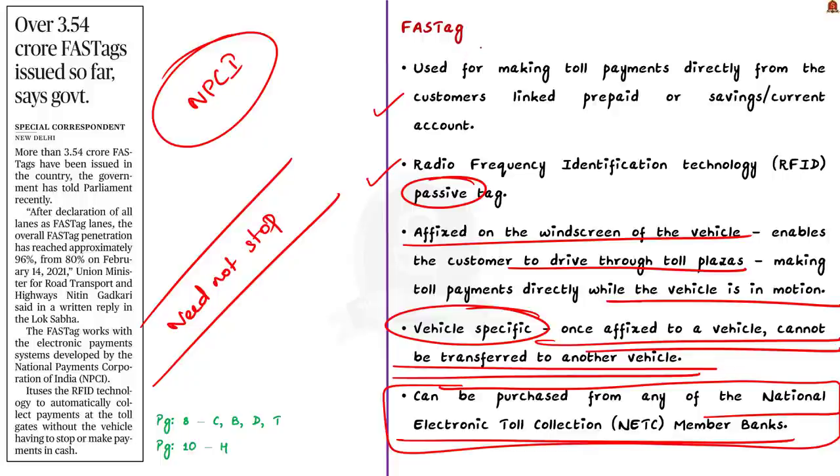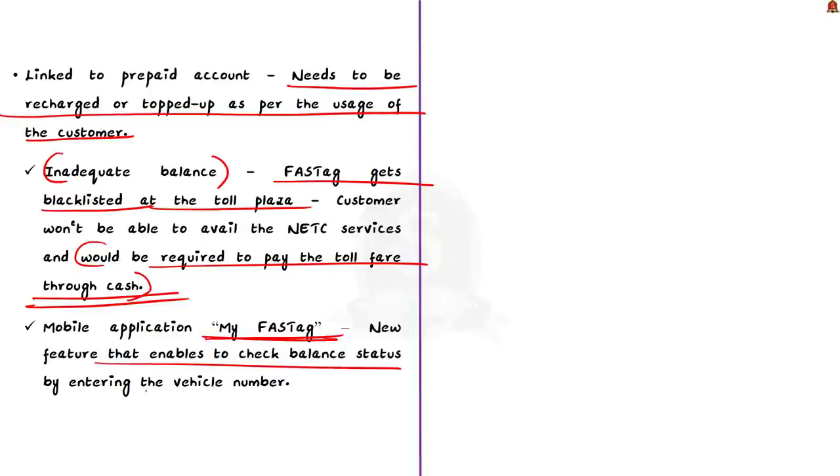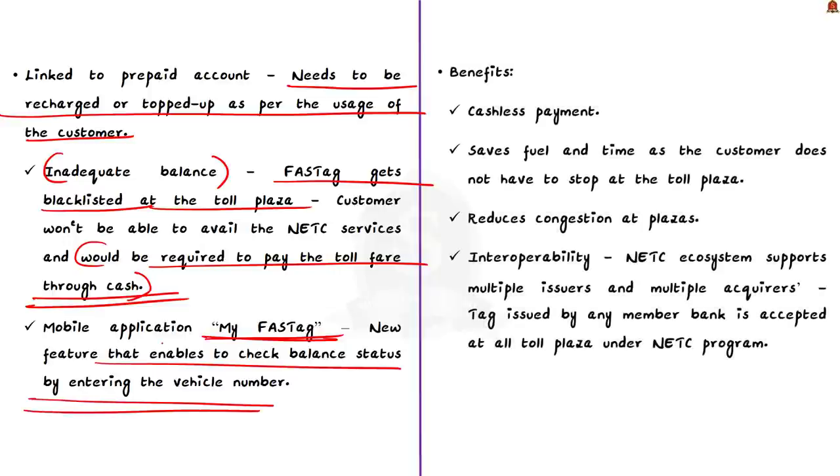If FASTag is linked to prepaid account then it needs to be recharged or topped up as per usage, like how we recharge our phone numbers when we have prepaid sim card. If adequate balance is not maintained then FASTag gets blacklisted at the toll plaza. In such scenario if customer travels through toll plaza without recharging, they won't be able to avail NETC services and would be required to pay toll fare through cash. The remedy is offered through the mobile application of FASTag called my FASTag. This enables users to check balance status by simply entering the vehicle number, making it easy for customers to know whenever balance in their accounts is less.